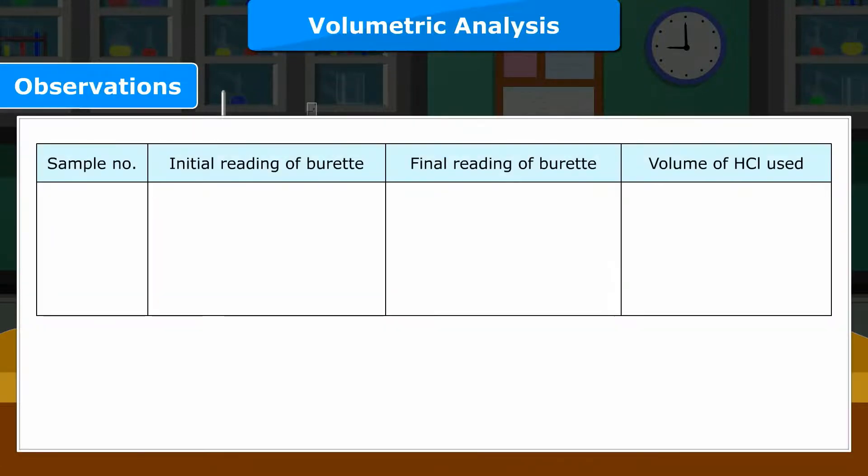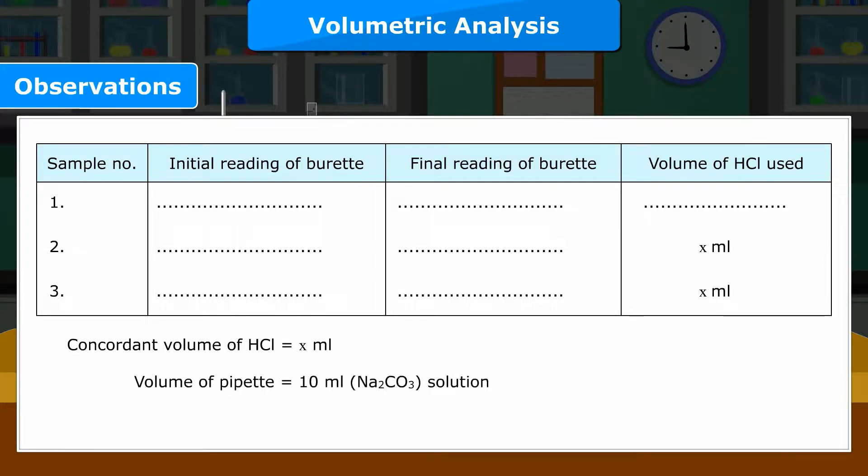Observations: Sample number, Initial reading of burette, Final reading of burette, Volume of HCl used: 1, 2, X milliliter, 3, X milliliter. Concordant volume of HCl is equal to X milliliter. Volume of pipette is equal to 10 ml Na2CO3 solution.